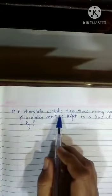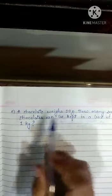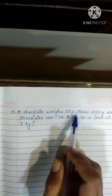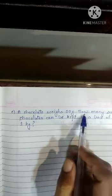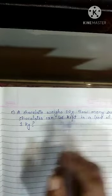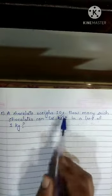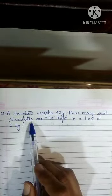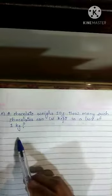A chocolate weighs 20 grams — we are talking about only 1 chocolate. What is the weight of 1 chocolate? 20 grams. How many such chocolates can be kept in a box of 1 kg? 1 chocolate weight is given to us and we have to find out how many 20-gram chocolates can be kept in a box of 1 kg.